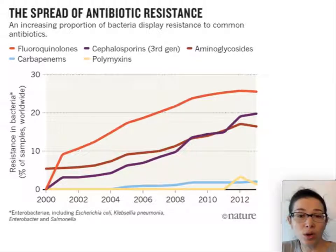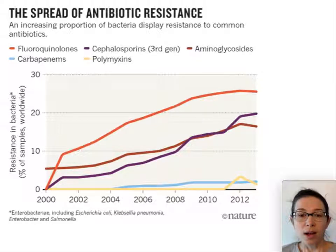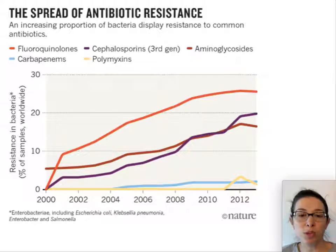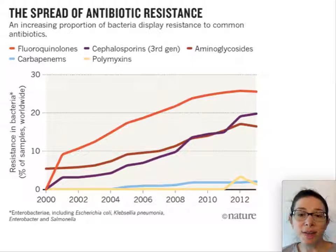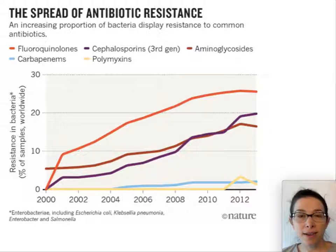As we continue to fight off bacteria and try to kill them, they are also fighting back through random mutations, some of which give them resistance to antibiotics. As a result, we do see increases in antibiotic resistance, and these data show that over time there has been a decrease in the efficacy of various antibiotics against a larger percent of the microbial populations we want to protect ourselves from. That is our bacteria lecture — thank you for listening.